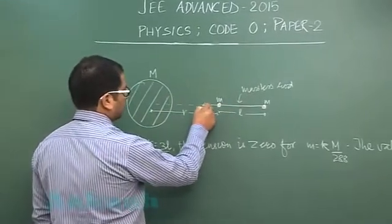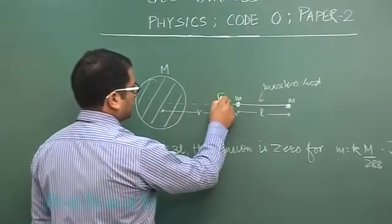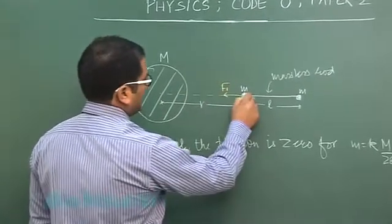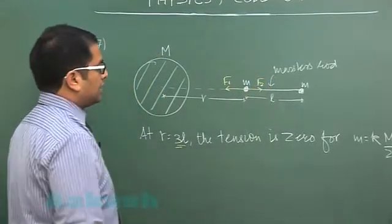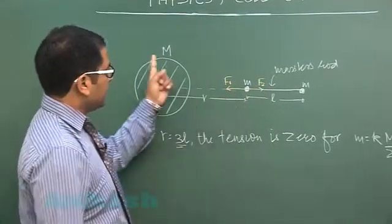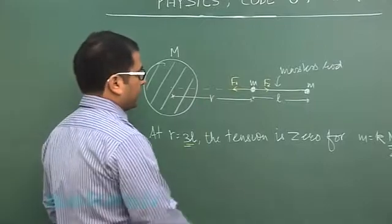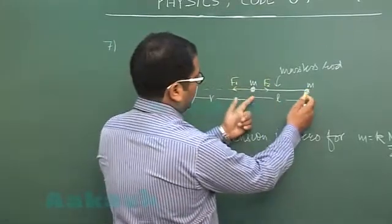Now let's see: small m would be exerted upon by the force F₁ and this force F₂ where F₁ would be Gmm by r² and F₂ would be Gm² by l².